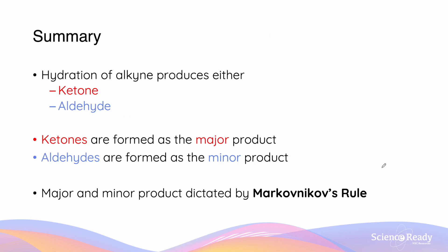So to summarize, we know that the hydration of an alkyne will produce either a ketone or an aldehyde. Ketones however are formed as a major product, while aldehydes are formed as a minor product, and major and minor products are dictated by Markovnikov's rule.